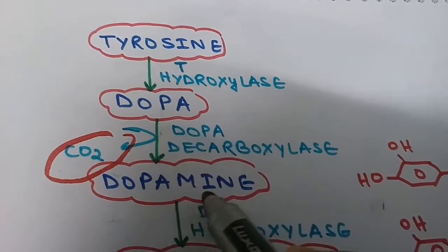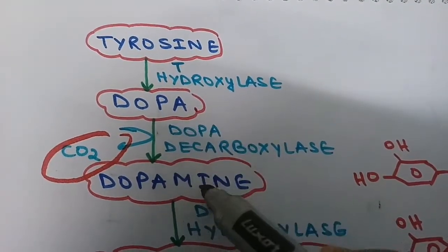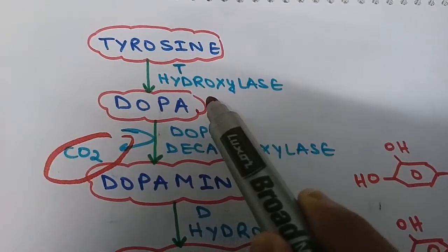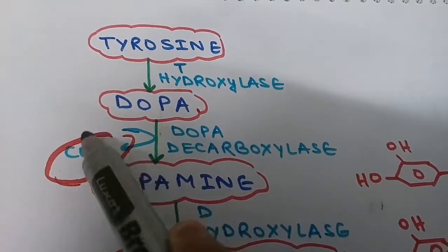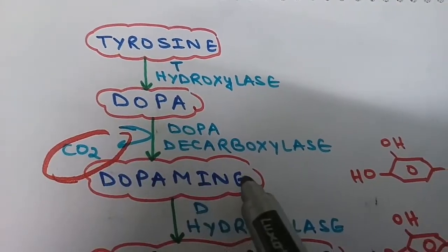This DOPA undergoes decarboxylation, releasing CO2. The enzyme is DOPA decarboxylase, and it forms dopamine. DOPA and dopamine differ by only a carboxyl group. In DOPA there was a carboxyl group, but that carboxyl group is released as CO2, forming dopamine.